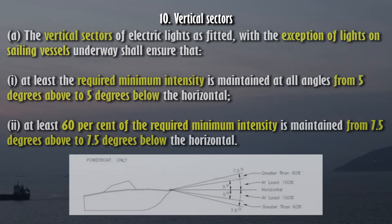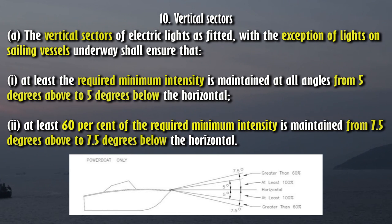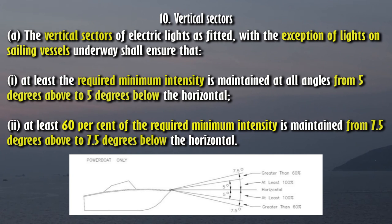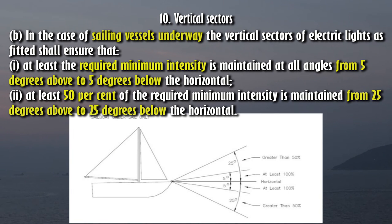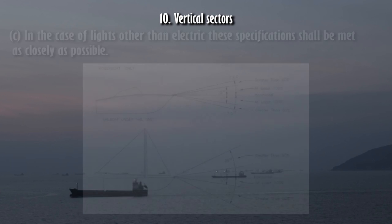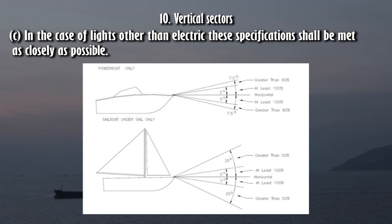Section 10 — Vertical Sectors. (A) The vertical sectors of electric lights as fitted, with the exception of lights on sailing vessels underway, shall ensure that: (1) at least the required minimum intensity is maintained at all angles from 5 degrees above to 5 degrees below the horizontal; and (2) at least 60% of the required minimum intensity is maintained from 7.5 degrees above to 7.5 degrees below the horizontal. (B) In the case of sailing vessels underway, the vertical sectors of electric lights as fitted shall ensure that: (1) at least the required minimum intensity is maintained at all angles from 5 degrees above to 5 degrees below the horizontal; and (2) at least 50% of the required minimum intensity is maintained from 25 degrees above to 25 degrees below the horizontal. (C) In the case of lights other than electric, these specifications shall be met as closely as possible.